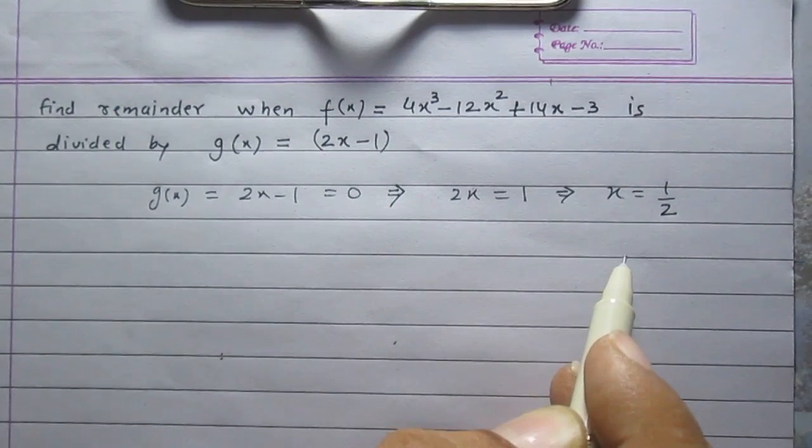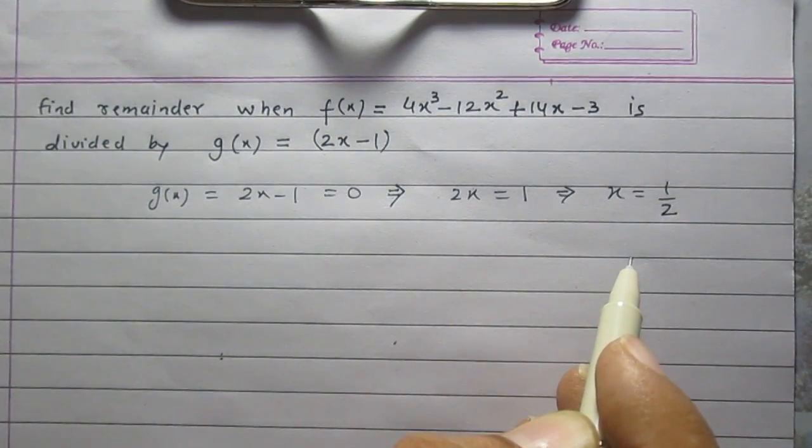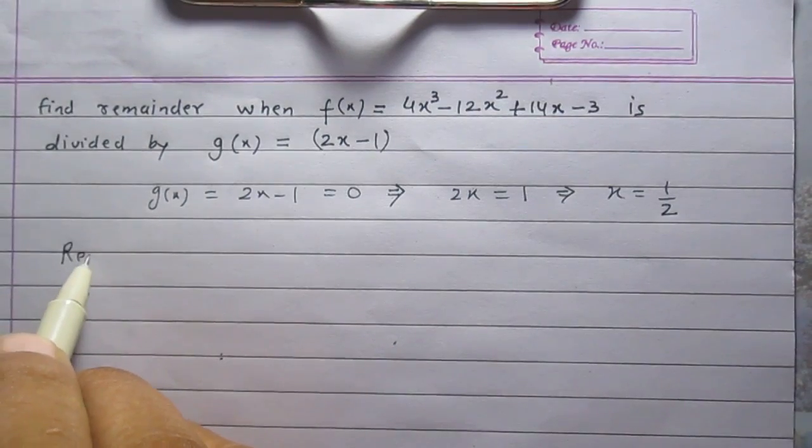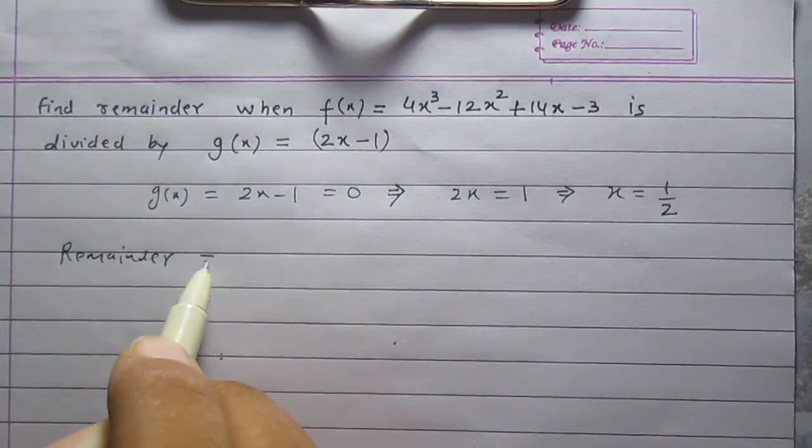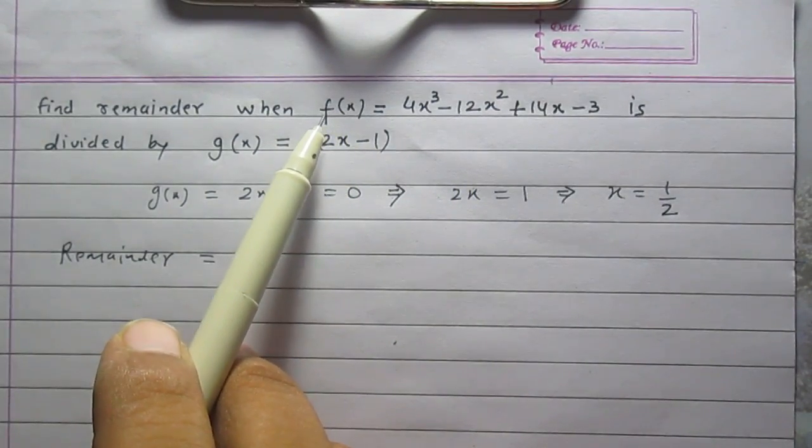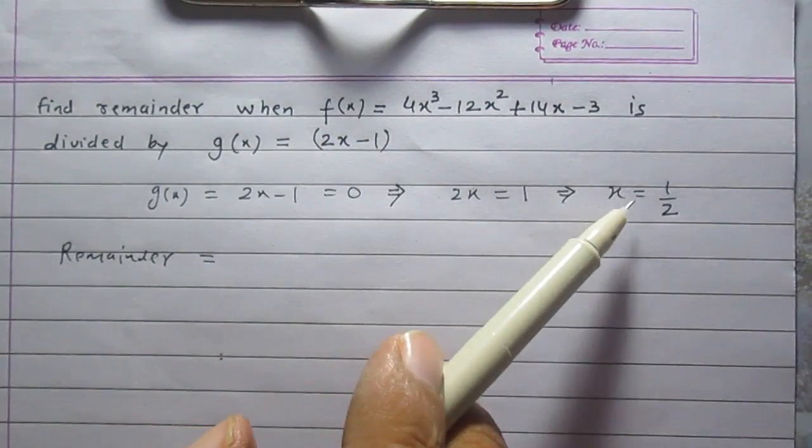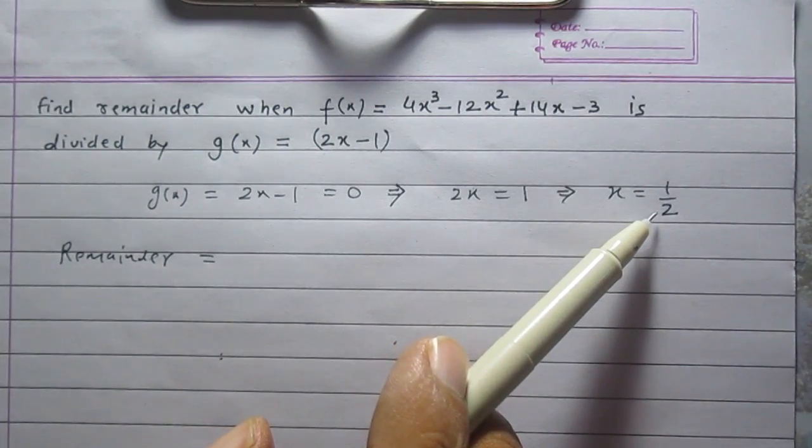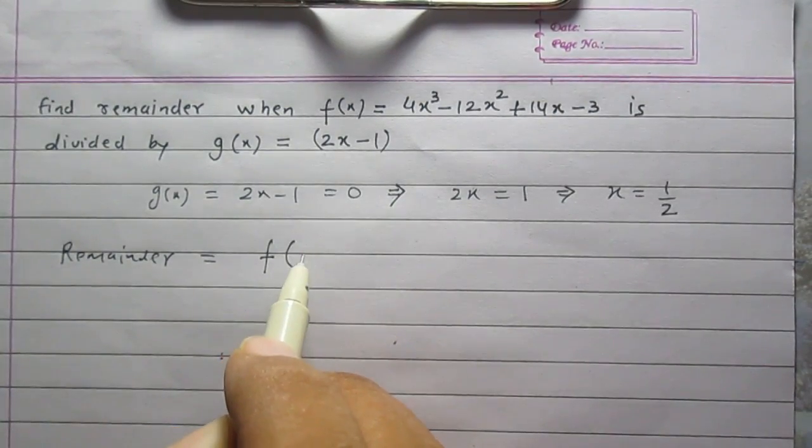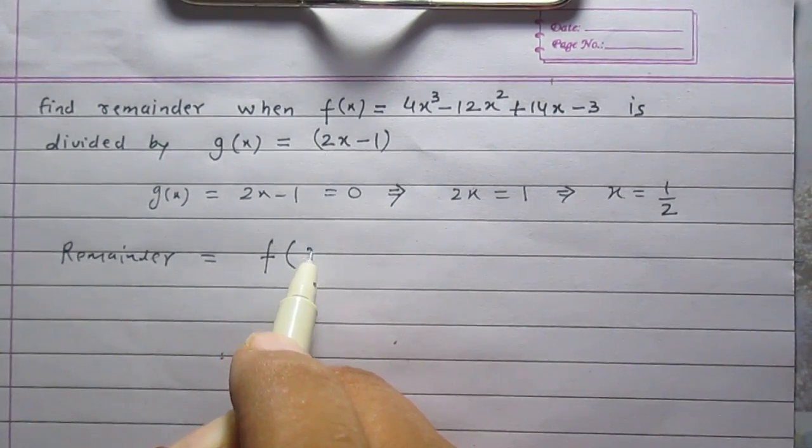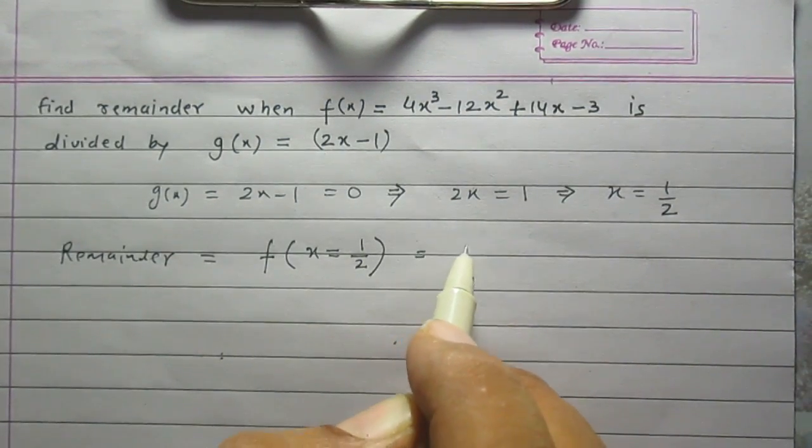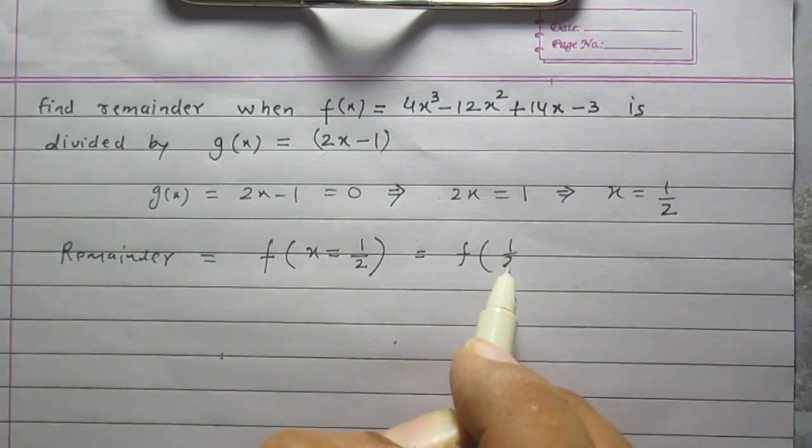Now according to the remainder theorem we can find remainder by finding the value of f(x), the dividend, when x is equal to the zero of the divisor, that is 1/2. So remainder is value of polynomial f(x) when x = 1/2, or simply you can say f(1/2).